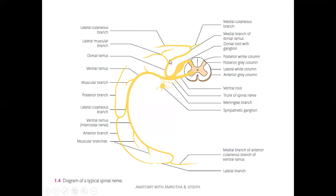The dorsal ramus goes to the back side of the body and divides into medial and lateral branches. The ventral ramus moves laterally, giving off a lateral cutaneous branch that divides into posterior and anterior branches. The ventral ramus then continues anteriorly to reach the anterior aspect of the body, where it forms the anterior cutaneous branch, which divides into medial and lateral branches.